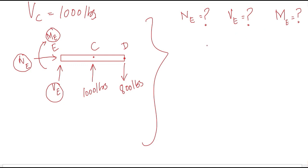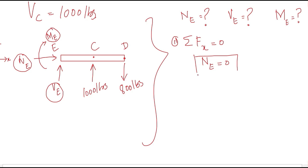Using the first condition of equilibrium — summation of all forces in the X direction equals zero — the only horizontal reaction in the body is NE. Therefore NE equals zero pounds.